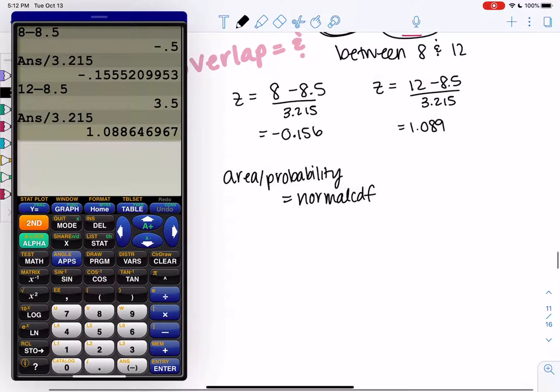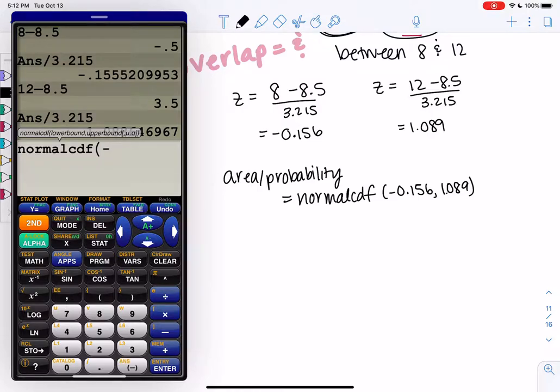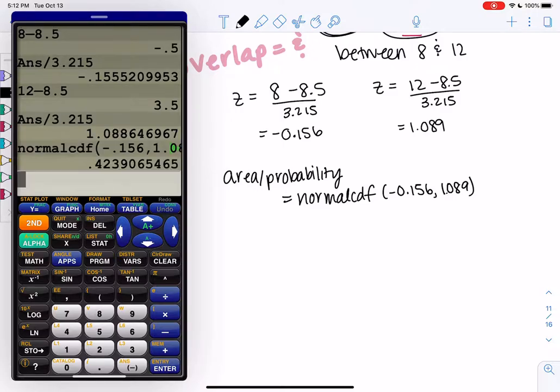And so normal CDF is just in between. So negative 0.156 up to 1.089. So we go 2nd, distribution, normal CDF. Negative 0.156, comma, 1.089. Enter.